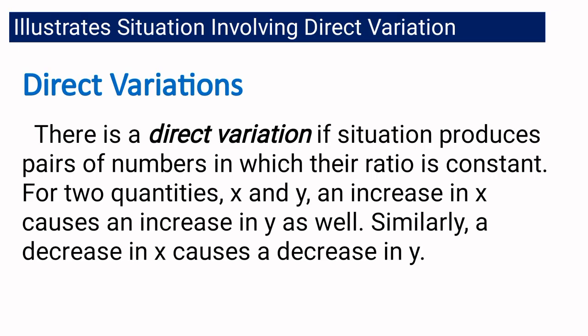Let us begin by defining what is direct variation. There is a direct variation if a situation produces pairs of numbers in which their ratio is constant. In direct variation, for the two quantities X and Y, an increase in X causes an increase in Y as well. Similarly, a decrease in X causes a decrease in Y.